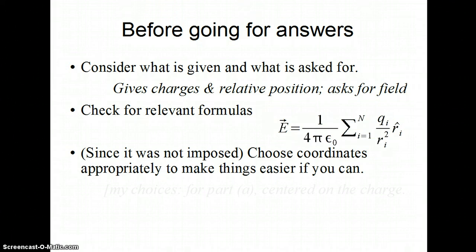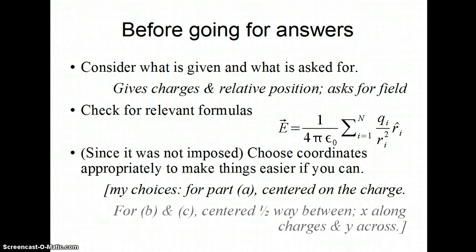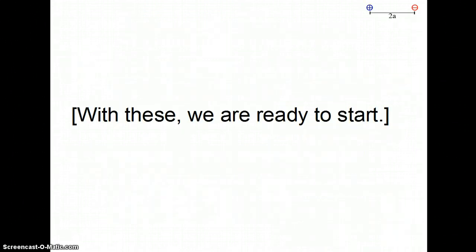I can choose a different coordinate system for part A that's centered on the positive charge than I do for parts B and C, where I basically pick x and y coordinates, including the line through the charges and the perpendicular bisector, the two lines that are being asked about. So with all that, we're ready to start calculating.